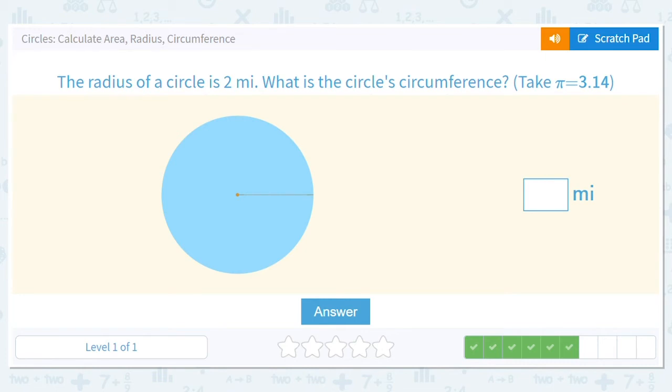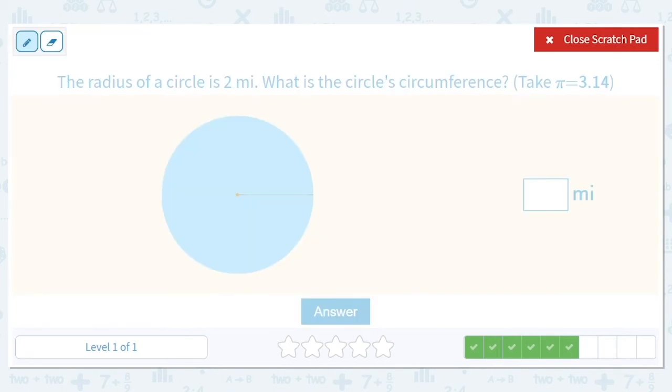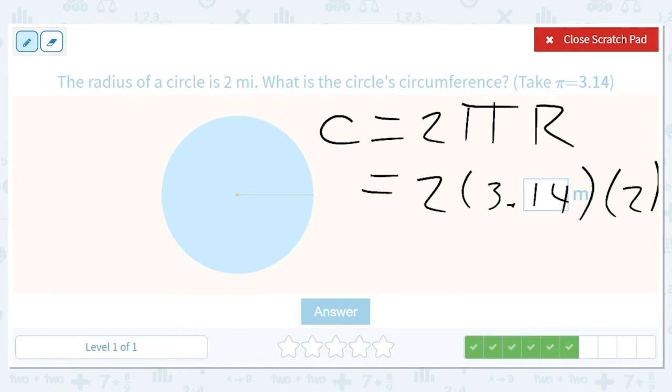The radius of a circle is 2 miles. What is the circumference? Okay, so circumference is equal to 2πr, and this will equal 2 times 3.14 times 2, which is equal to 4 times 3.14, which will be 12.56.